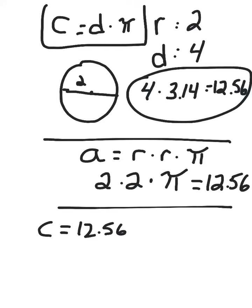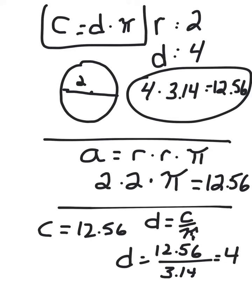First of all, you need to break it down and find the diameter. Then it would be 12.56 divided by pi. And this will work out so that the diameter is 4. Once you have the diameter as 4, then you'll know that the radius is 2. And then you can just do 2 times 2 times pi to find the area.